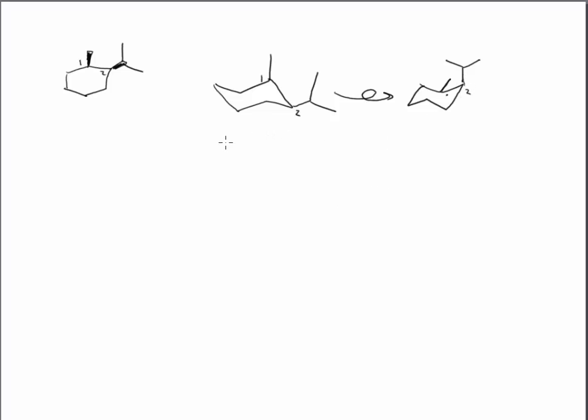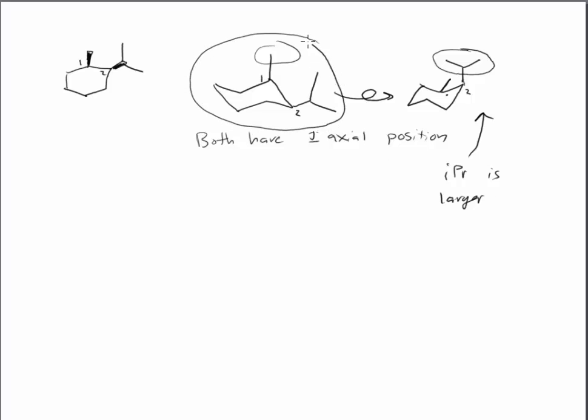Now which of these is higher in energy? They both have one axial position. Now we're going to look for the larger axial position. Here are the two axial substituents. Isopropyl is larger, and thus it has a bigger effect on the 1,3-diaxial destabilizing effect. The lower energy chair structure is going to be this one that has the smaller substituent axial. Lower energy equals smaller substituent in the axial position.